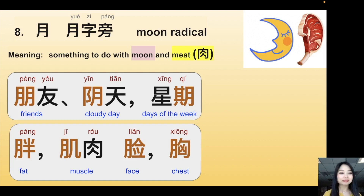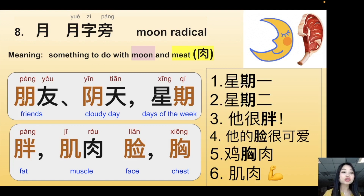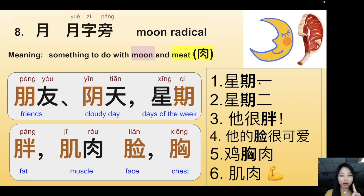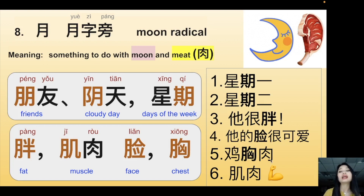The moon radical — 朋友 (friend — two moons together, they are quite similar), 阴天 (cloudy day — there's a moon), 星期 (week/period of time), 胖 (fat — there's a lot of meat), 肌肉 (muscle), 脸 (face), 胸 (chest). Sentences: 星期一 (Monday), 星期二 (Tuesday), 他很胖 (He's very fat), 他的脸很可爱 (His face is cute), 鸡胸肉 (chicken breast meat). Next time you see the moon radical, you'll know it relates to moon or meat.